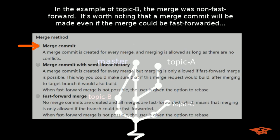Just to be clear, in the example of topic B here, the merge was actually non-fast forward. And it's worth noting that a merge commit will be made even if the merge could be fast forwarded. So let me show you what that looks like.